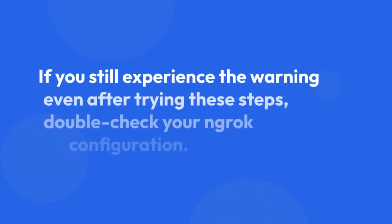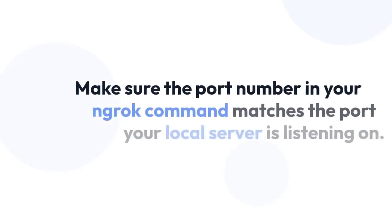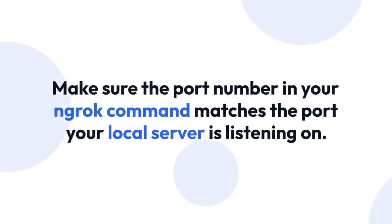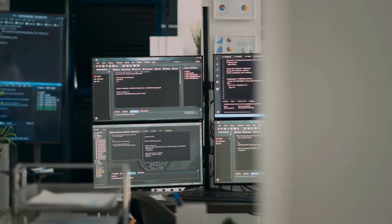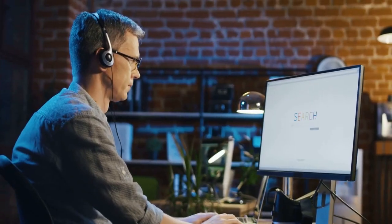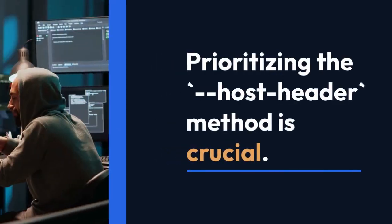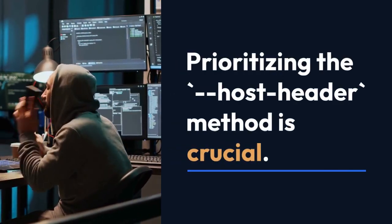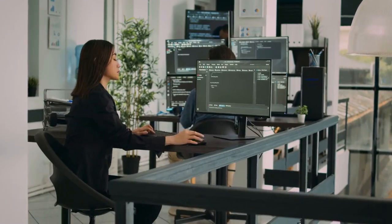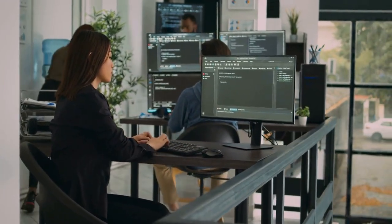Troubleshooting: if you still experience the warning even after trying these steps, double-check your ngrok configuration. Confirm that the port number you are specifying in your ngrok command matches the port your local server is listening on — sometimes small typos can cause these issues. Also, be sure that your firewall isn't blocking ngrok from accessing the internet. Remember, prioritizing the host header method is crucial, as it directly addresses the root cause of the warning in a cleaner and safer way than manually adding certificate exceptions.